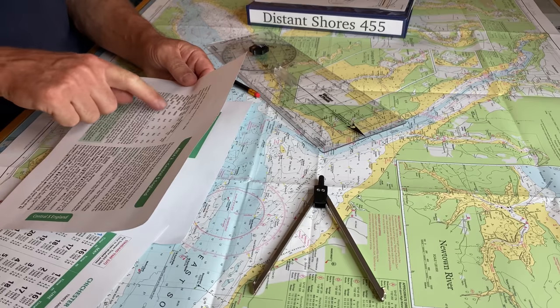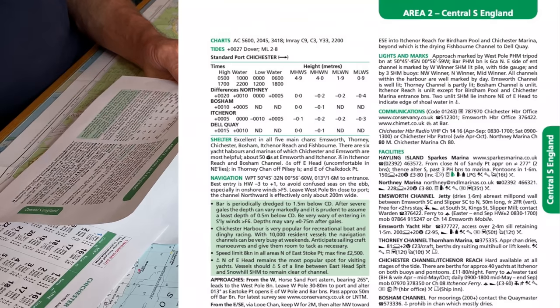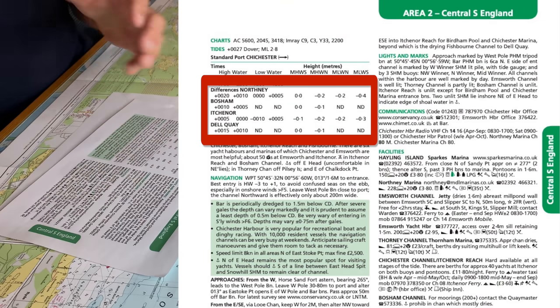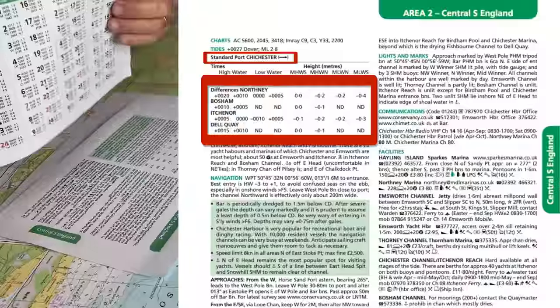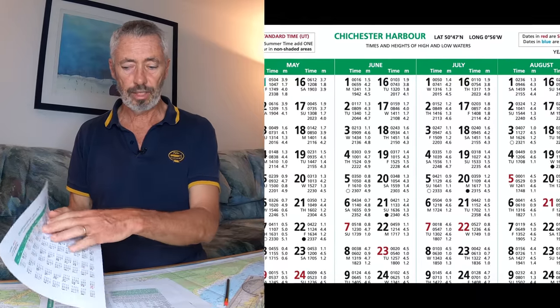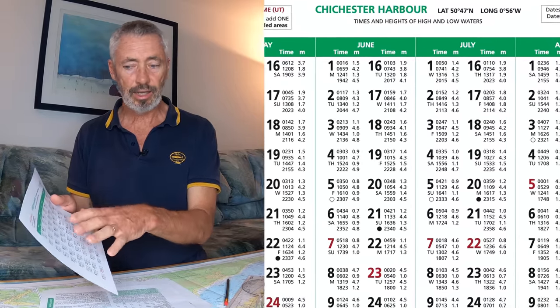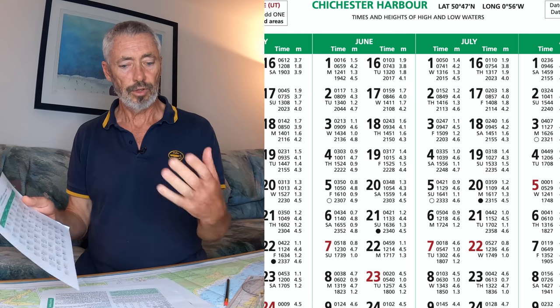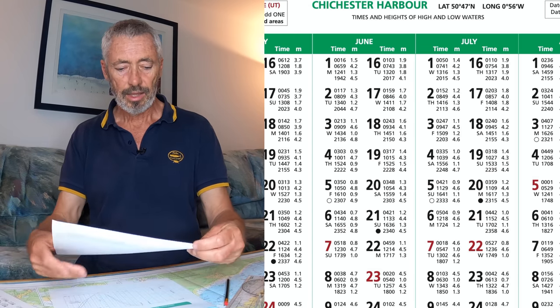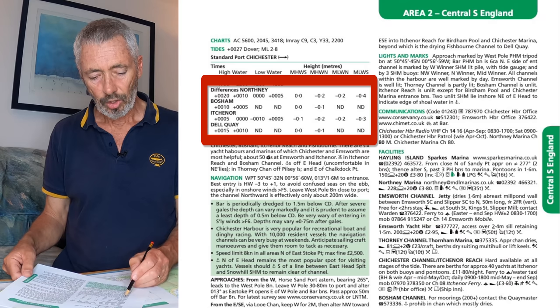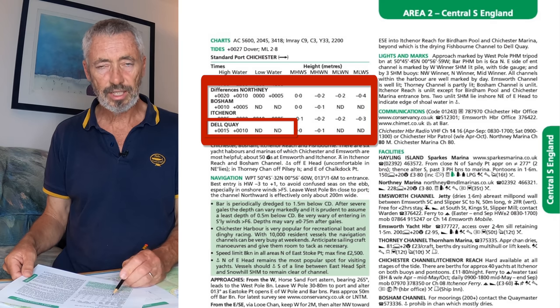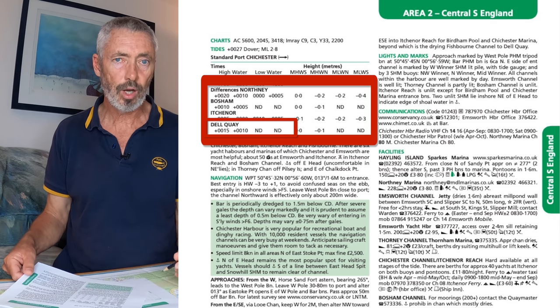The other information in the almanac covers a lot about the port itself. The standard entry for Chichester Harbour gives very detailed tides for every day with their highs and lows for that main area. And then there are differences inside the harbour, say at Bosham, Itchenor, or Dell Quay. Looking at the Dell Quay entries, we see it's only 10 and 15 minutes later at high water, so we can basically ignore those differences.